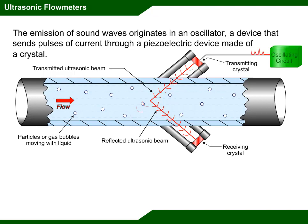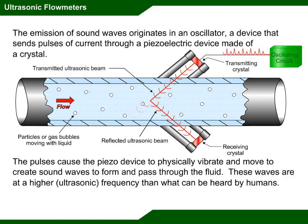The emission of sound waves originates in an oscillator, a device that sends pulses of current through a piezoelectric device made of a crystal. The pulse causes the piezo device to physically vibrate and move, creating sound waves that form and pass through the fluid. These waves are at a higher ultrasonic frequency than what can be heard by humans.